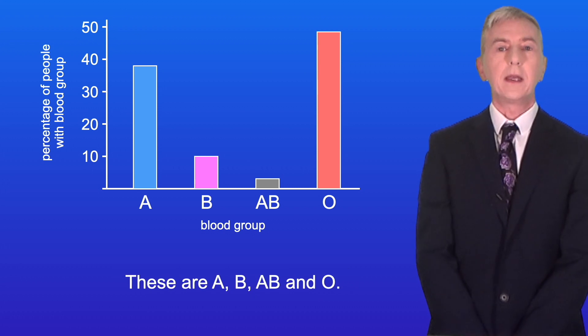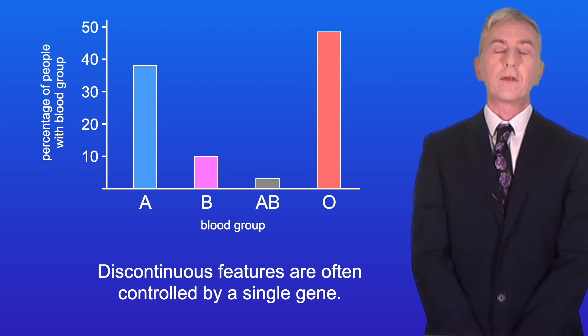Human blood groups fall into four possible values. These are A, B, AB, and O. Discontinuous features are often controlled by a single gene.